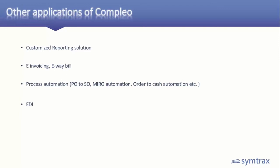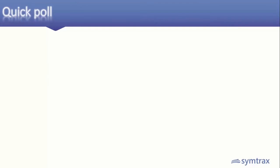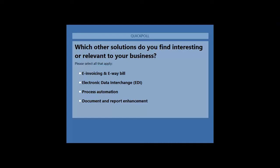Along with document reformatting and digital signatures, we have other applications such as custom reporting, e-invoicing, e-waybill. We are also into process automation such as PO2S automation, GRN automation, and invoice automation. We can also provide EDI solutions. Which other solution do you find interesting or relevant to your business? First option: e-invoicing and e-waybill. Second: EDI. Third: process automation. Fourth: document and report enhancement.